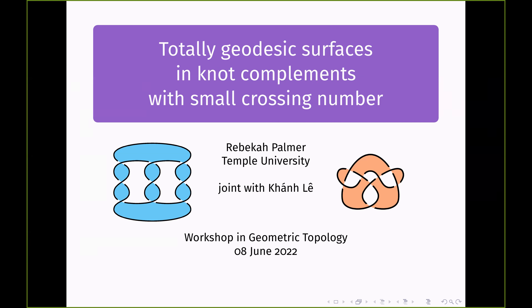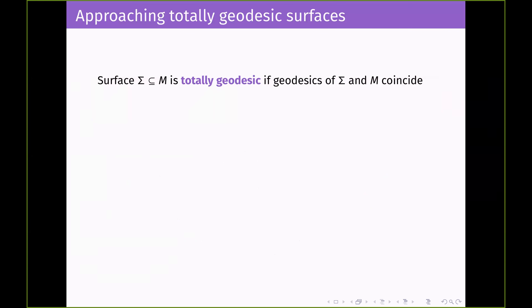Everything you're going to see here has been joint work with Khánh Lê. So let's start off by asking: what is a totally geodesic surface? Imagine that you have a surface sitting inside of a three-manifold. You call that surface totally geodesic if the geodesics of the surface and the manifold coincide. If you have two points on the surface, the shortest path between them — that geodesic — is going to stay on the surface; you don't get any shortcuts through the larger ambient three-manifold.